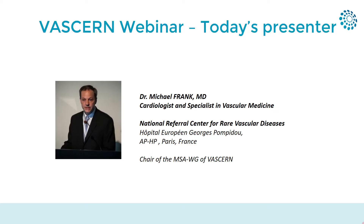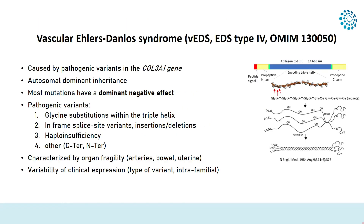Welcome to all the people logged in today for this webinar. I wanted to do first a quick reminder about vascular Ehlers-Danlos syndrome. It's a genetic rare condition caused by mutations in the COL3A1 gene with an autosomal dominant inheritance, and most of the mutations have a dominant negative effect, which is quite of interest in pregnancy, as we will see later.